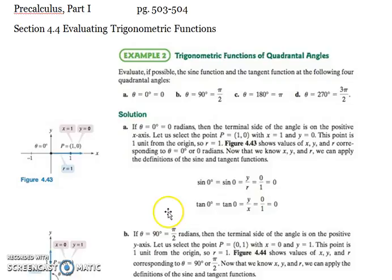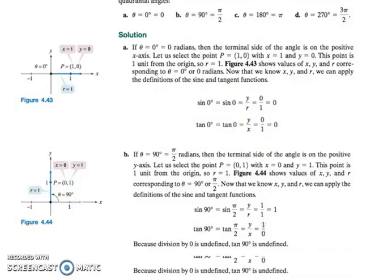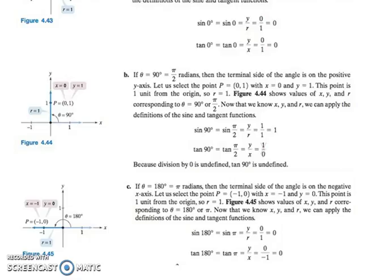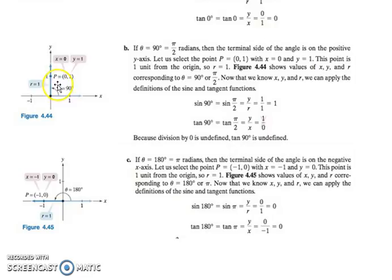For part b, it wants to know for 90 degrees or π over 2. And it doesn't matter if you're in radians or degrees, the answer is the same. For 90 degrees or π over 2, same thing. Now your x is 0 because you're not going left or right. Your y is 1 because you're going up.